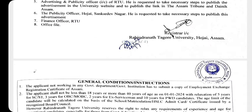For age limit, the minimum age is 18 years and maximum is 40 years, calculated as of 1st January 2016. For ST/SC category, 5 years relaxation is available. For OBC-M and OBC-R, 3 years relaxation is available. For ex-servicemen, 2 years relaxation. For PwBD category, 10 years relaxation is available.